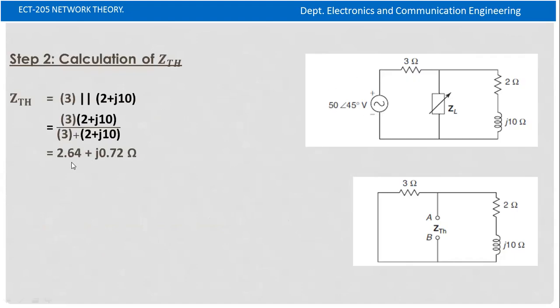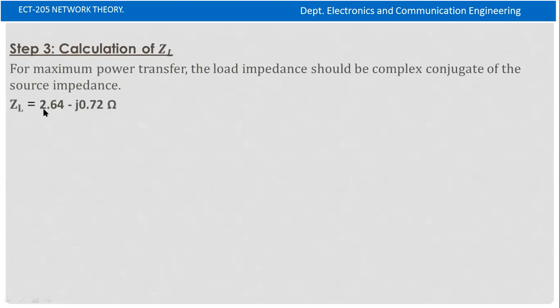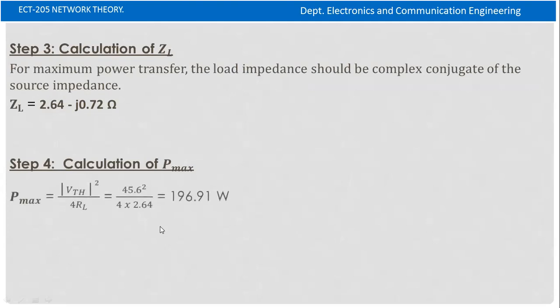For maximum power transfer, ZL equals Zth conjugate. Maximum power Pmax equals |Vth|² divided by 4 times RL. The magnitude of Vth is 45.6, squared, divided by 4 times RL of 2.64, giving Pmax equals 196.91 watts.